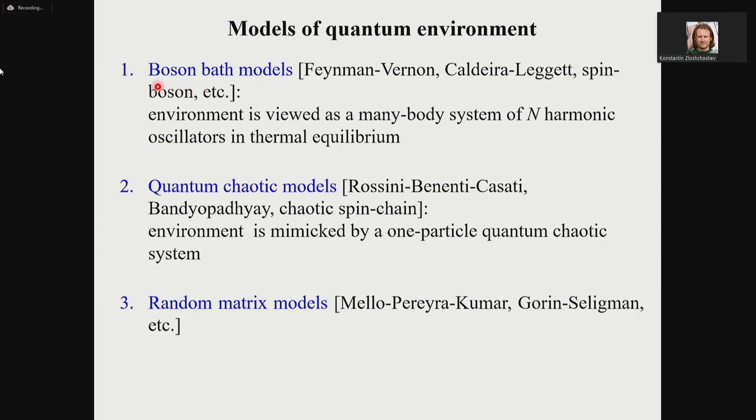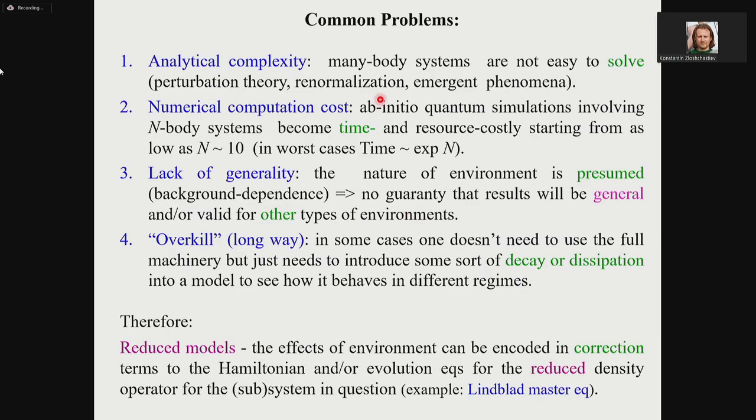Obviously there are different models. One could select the most popular ones such as boson bath models, less known quantum chaotic models, random matrix models, etc. All of these environment models have problems such as analytical complexity. Many-body systems, if you do numerical computations, in most cases your time computations would be proportional to exponential N for N-body systems.